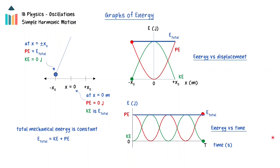The graph of potential energy as a function of time will be a cosine squared function, with the same period as the period of motion of the oscillator. The kinetic energy as a function of time will then be a sine squared function. The total energy as a function of time will be a constant horizontal line. The potential energy as a function of displacement graph will be parabolic, because the potential energy is proportional to the displacement squared. The total energy will be constant, resulting in a horizontal line, and the kinetic energy will be equal to the total energy minus the potential energy, resulting in an inverted parabola for the kinetic energy as a function of displacement graph.